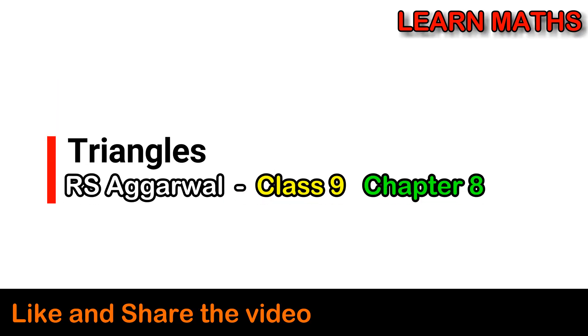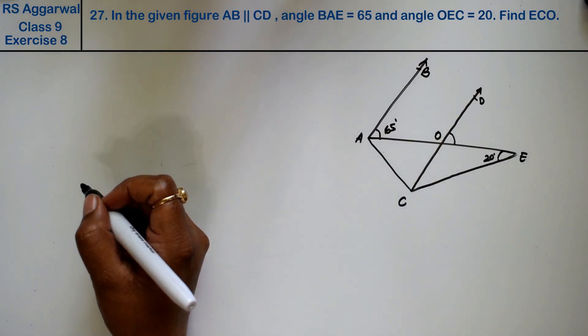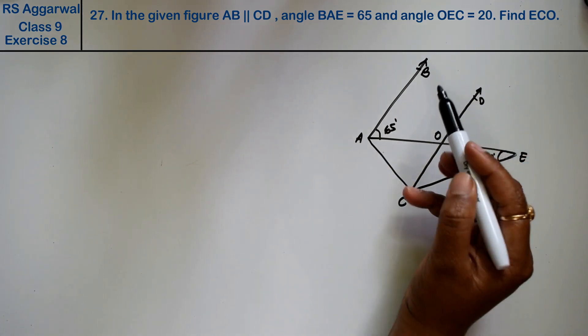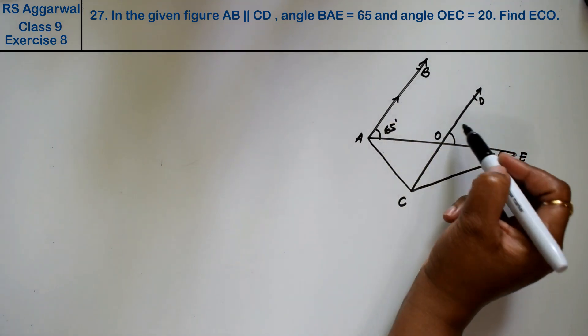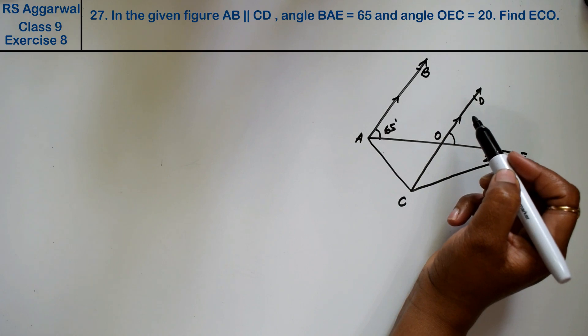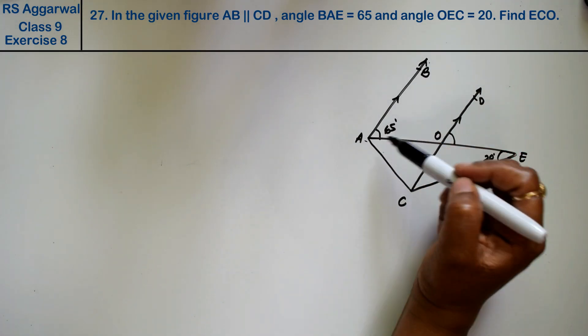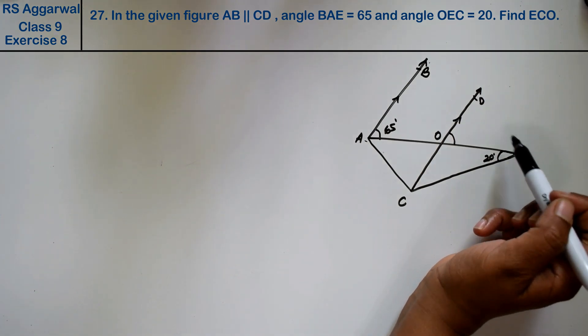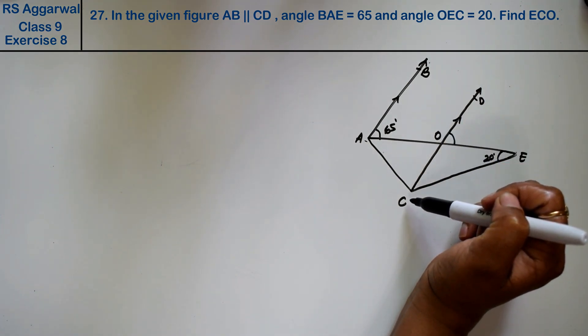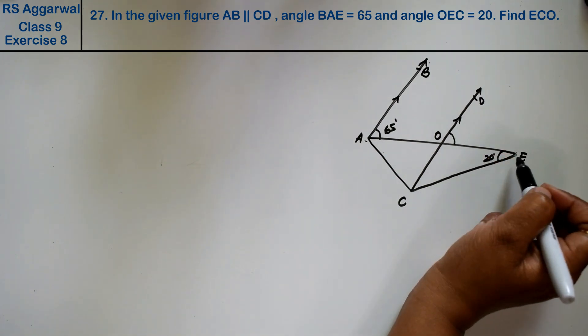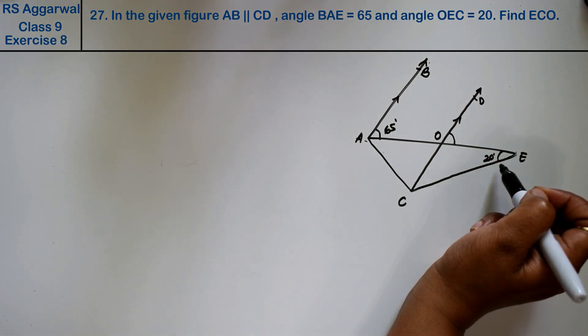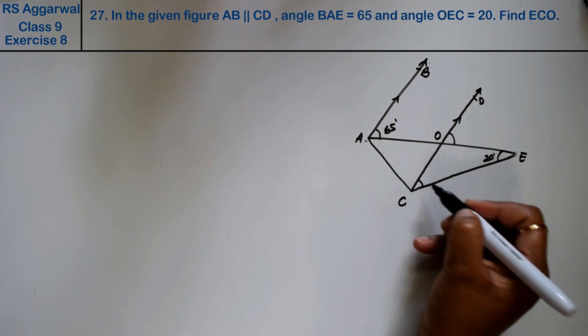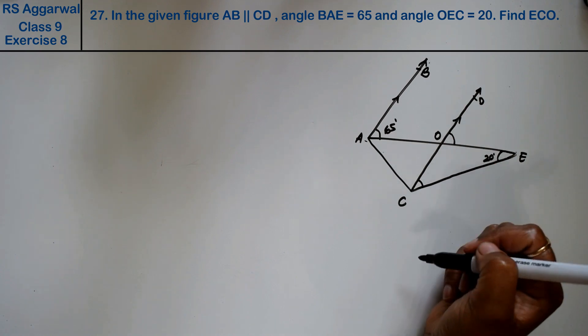Let's do question number 27 of exercise 8, that is the triangle question. In the given figure, AB is parallel to CD. Now what is given? Angle BAE is 65 degrees, angle OEC is 20 degrees, and we need to find angle ECO. We will find this angle.